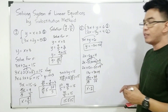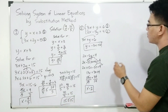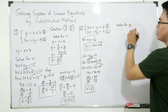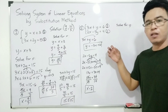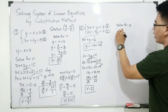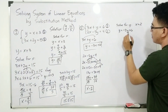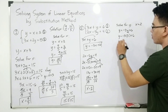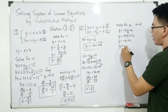Now that we've solved for x, the next step is to solve for y. Using the expression y = −3x + 6 with x = 2: y = −3(2) + 6 = −6 + 6 = 0. So our y is 0.